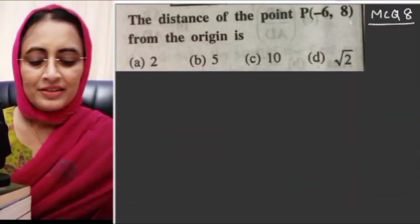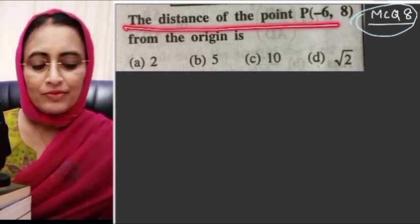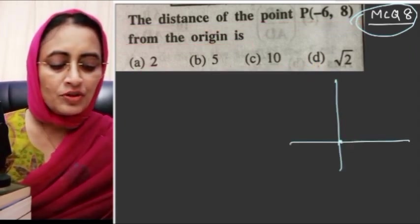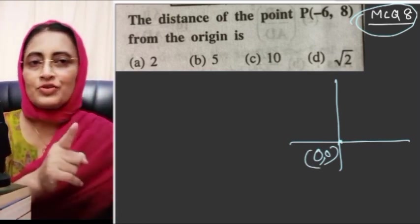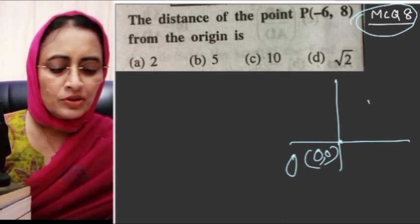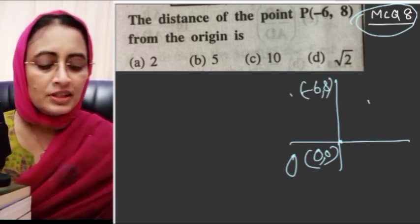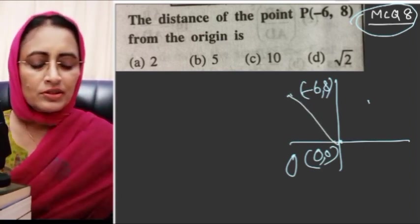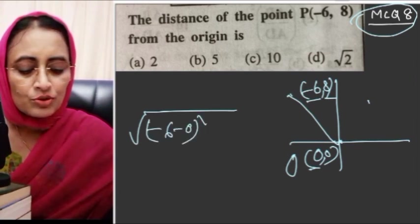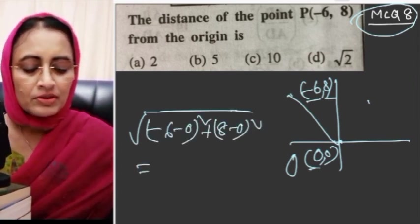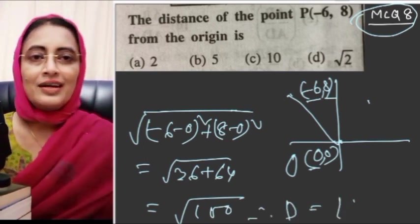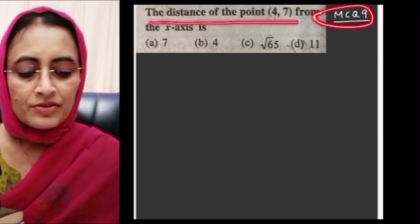MCQ number 8: The distance of the point P(minus 6, 8) from the origin. The origin is (0, 0). x1=minus 6, y1=8, x2=0, y2=0. Distance equals square root of (minus 6 minus 0) whole square plus (8 minus 0) whole square equals square root of 36 plus 64 equals square root of 100 equals 10. Option C is the correct answer.